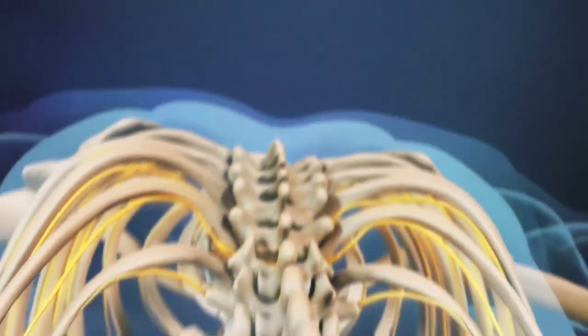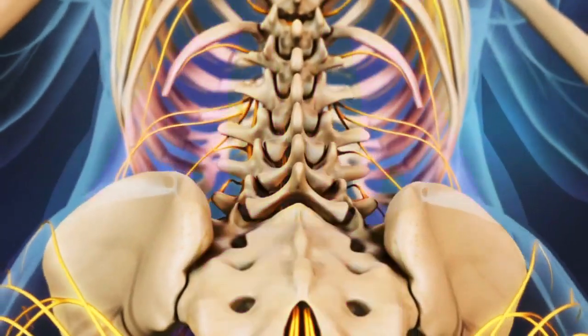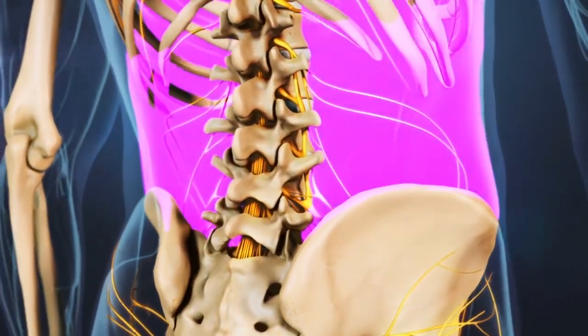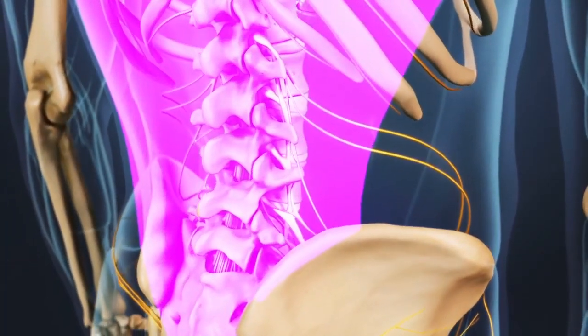The lower back region contains large muscles that support the back and allow for movement in the trunk of the body. These muscles can spasm or become strained, which is a common cause of lower back pain.